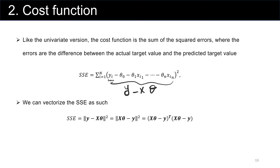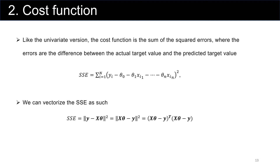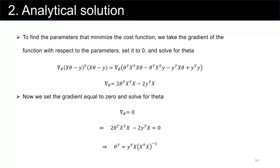If we want to expand this, we can show it as (X theta minus y) transpose multiplied by (X theta minus y). We do this because we want to find a closed-form analytical solution for multivariate regression.